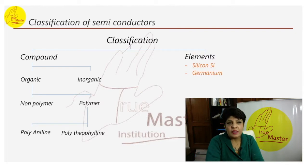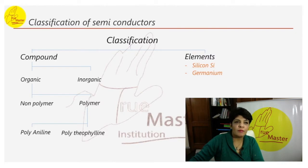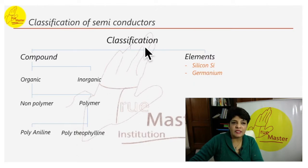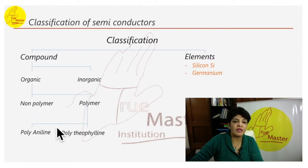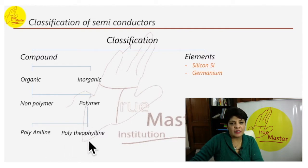The semiconductor we will mainly study in this chapter is silicon. The classification of semiconductors is basically divided into two parts: compound and element. In compound, we can divide it into organic and inorganic. Under organic, we have non-polymer and polymer. Polymer can be further divided into polyanisoline and polytheophylline. These are the classifications of semiconductors, but the main one we will study is silicon.